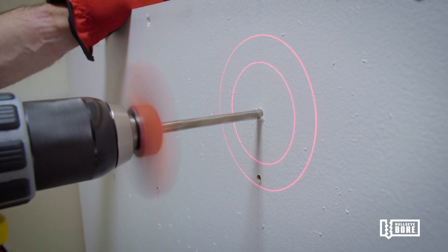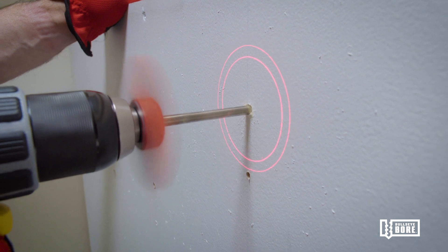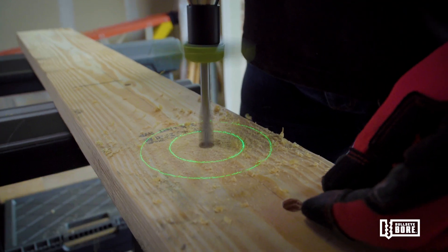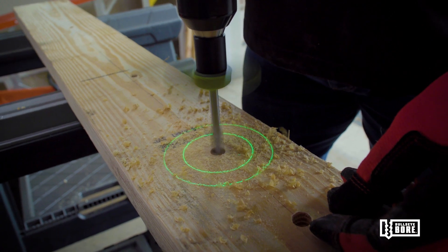When the circles are aligned on the work surface, the drill is straight. Just keep those circles aligned as you drill, and you'll always get a straight hole. It's really that easy.